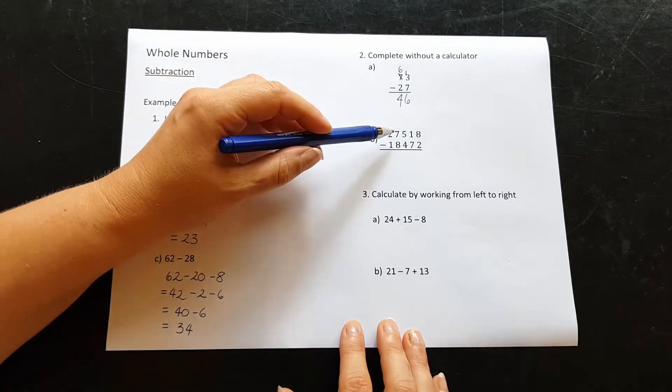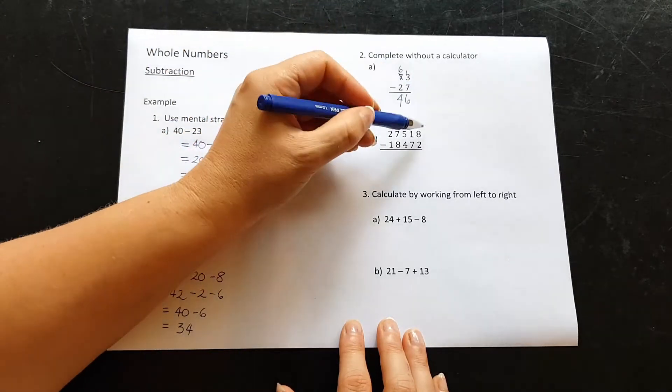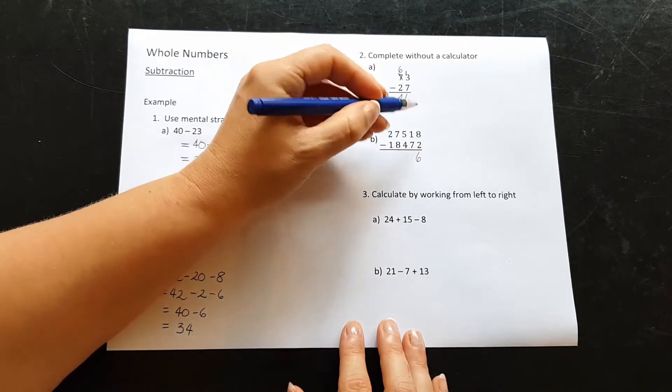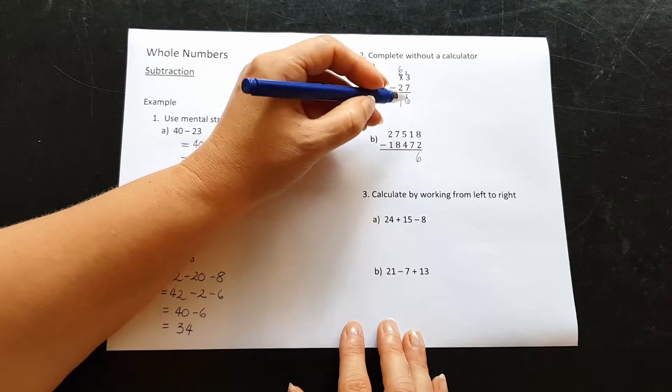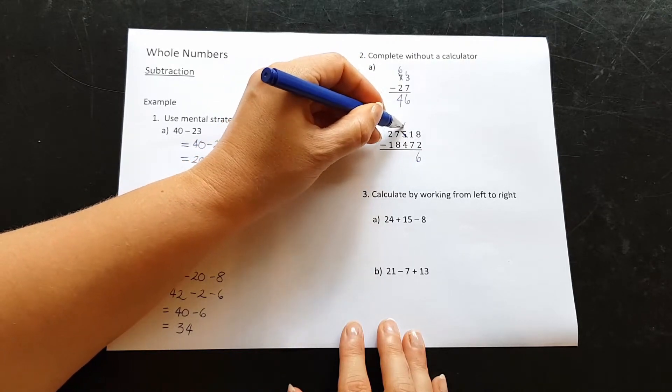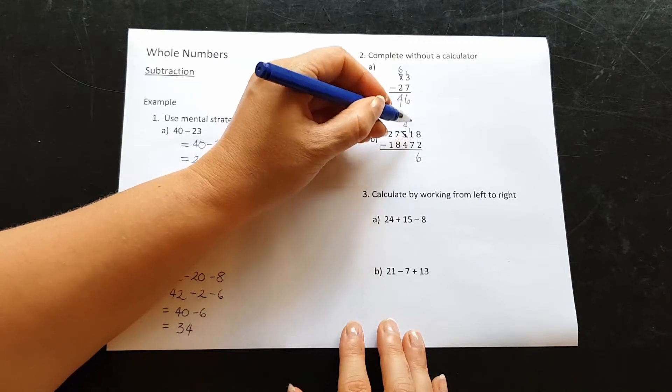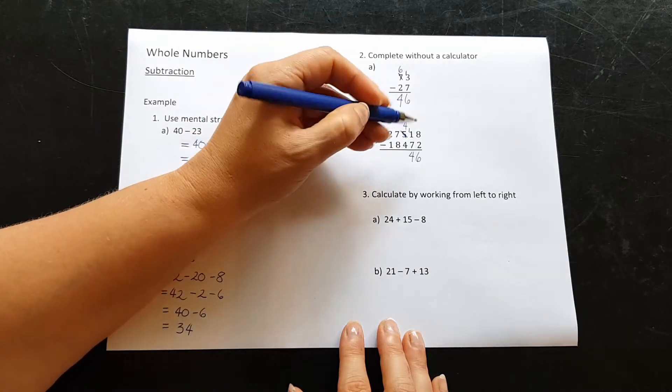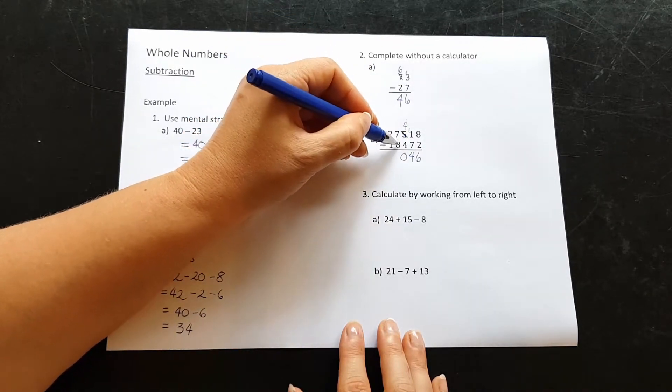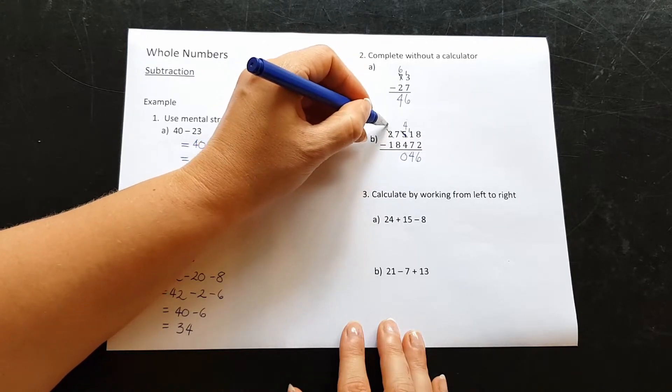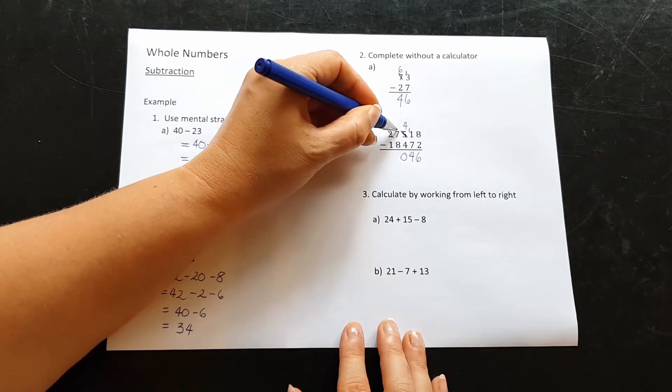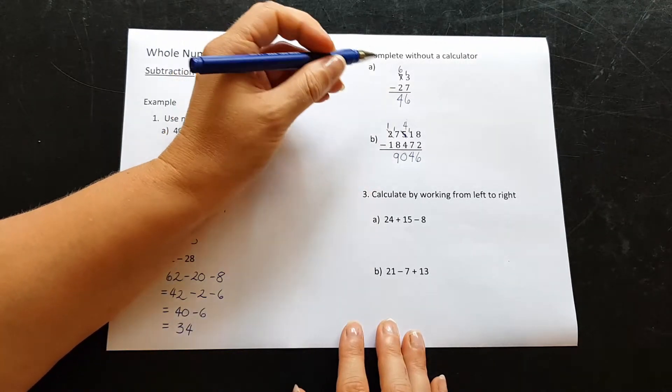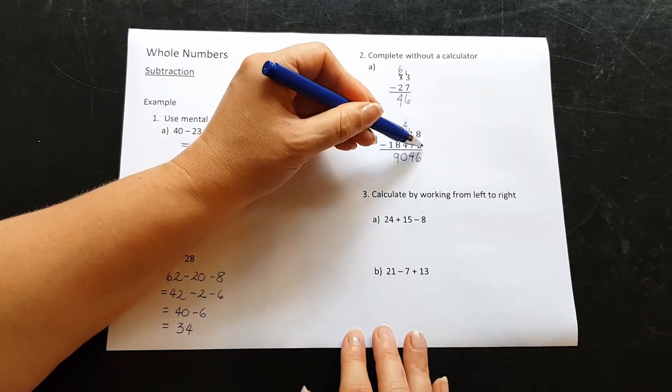For B, much bigger numbers this time, but the process is still the same. Start all the way down here with the ones. 8 minus 2 is 6. 1 minus 7, we can't do. So we're going to borrow from above. This is going to change to a 4 to make this 11. 11 minus 7, we get 4. 4 minus 4 is 0. 7 minus 8 can't do. So we'll borrow from here again to make it 17. 17 take away 8 is 9. And 1 take away 1 is 0. So our answer is 9,046.